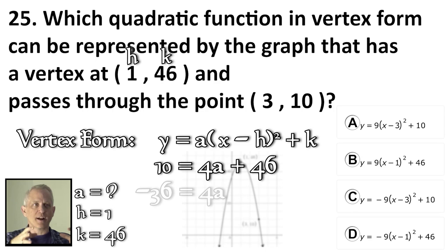Now we have all the information we need because now we know h is 1, k is 46, and a is negative 9.